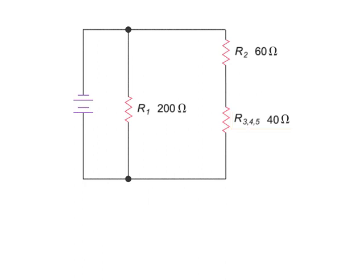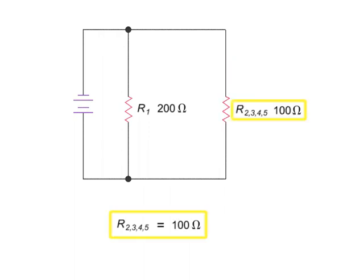Now, we have further reduced the circuit to two resistors in series, R2 and the equivalent resistance of the R3, R4, and R5 resistors. Again, because we have resistors in series, we can simply add the 60 ohms to the 40 ohms to get a combined value of 100 ohms.